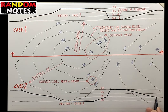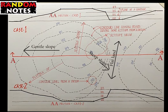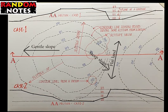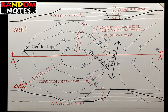Let us understand a few interpretations from the contour conditions. When the spacing between the contours is more, the slope of the land is gentle. When the spacing is less, there is a steep slope. Around a flat land, you have contours with the same level values.